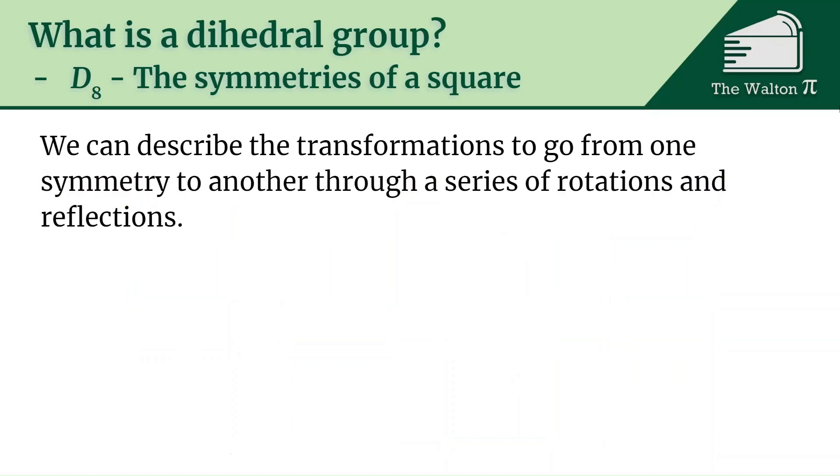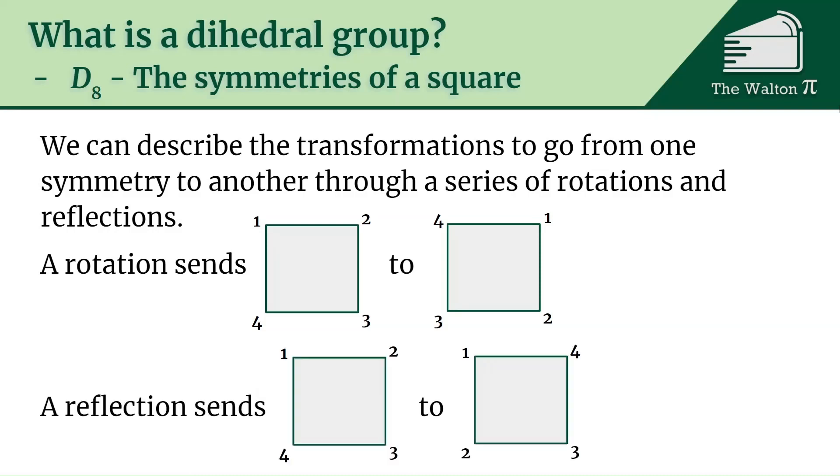We can describe these transformations to go from one symmetry through another through a series of rotations and reflections. For example, we can rotate one, two, three, four to become four, one, two, three. We've rotated it once. A reflection would send one, two, three, four to one, four, two, three. We just flip it across the diagonal from one to three. So those are the different reflections and rotations that we have.